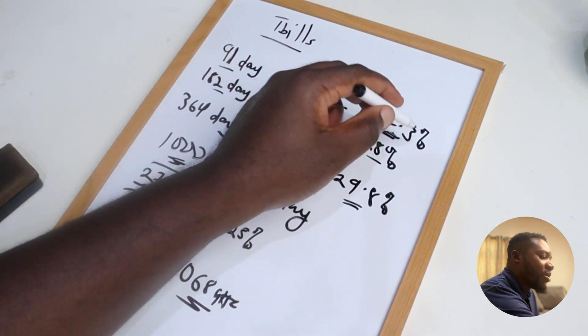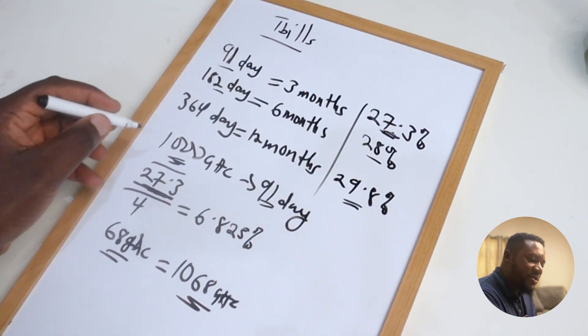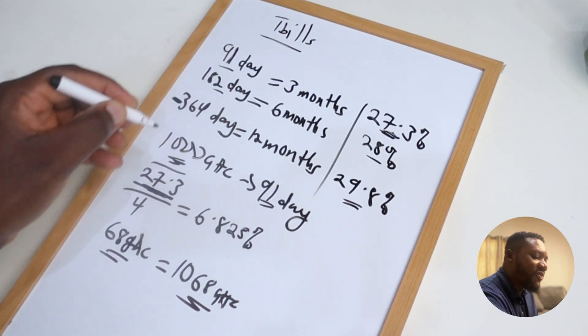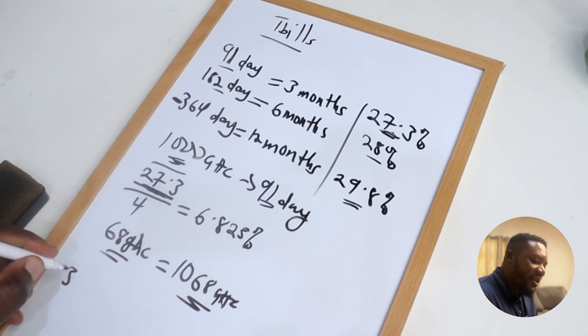So let's do this calculation. This particular period that we have here, 364, let's divide 364 by 4. We're going to get 91.